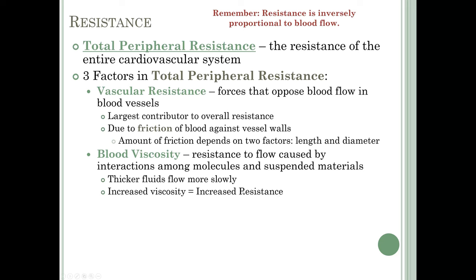The second major factor is blood viscosity — resistance to flow caused by interactions among molecules and suspended materials, basically how thick the blood is. Blood is already thicker than water, but as blood gets thicker it has increased viscosity and decreased flow. Thicker fluids flow more slowly — think about pouring honey or molasses. Viscosity can change with dehydration, increasing blood viscosity, or with blood doping such as taking erythropoietin to increase red blood cell count, which also increases viscosity and therefore resistance.